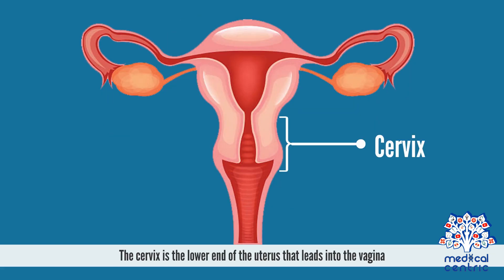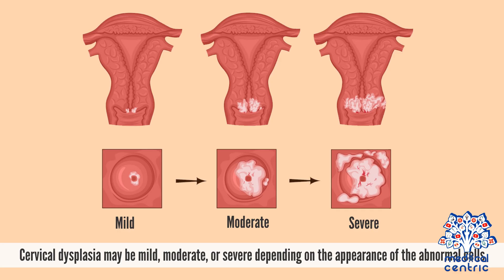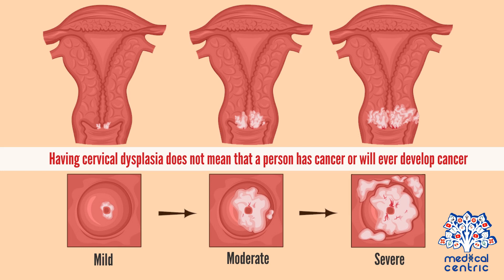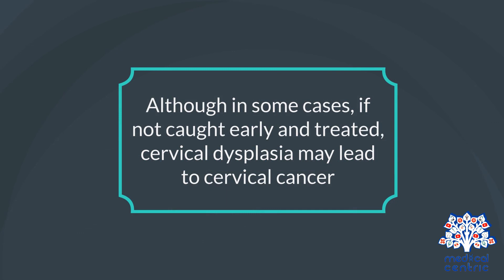The cervix is the lower end of the uterus that leads into the vagina. Cervical dysplasia may be mild, moderate, or severe, depending on the appearance of the abnormal cells. Having cervical dysplasia does not mean that a person has cancer or will ever develop cancer, although in some cases, if not caught early and treated, it may lead to cervical cancer.